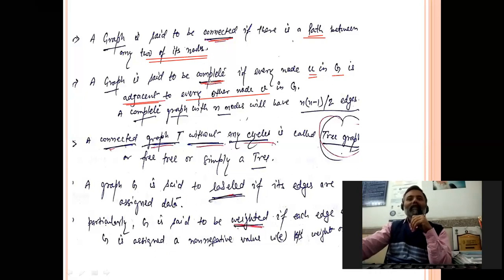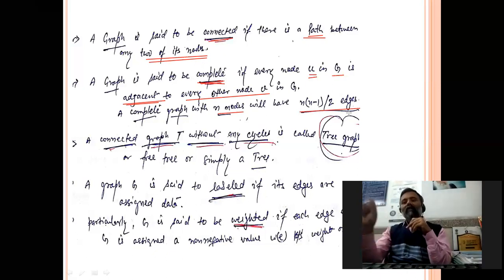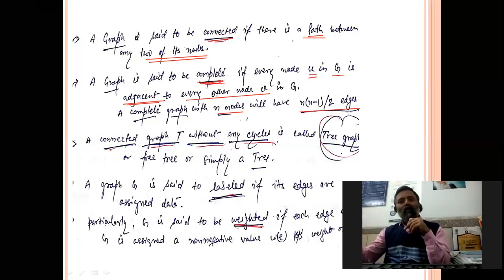For a complete graph with n nodes, the number of edges required is n(n-1)/2. For the first node we need n-1 edges, for the second node n-2 edges, for the third n-3 edges, and so on. Adding n-1 + n-2 + n-3 + ... gives n(n-1)/2 total edges.